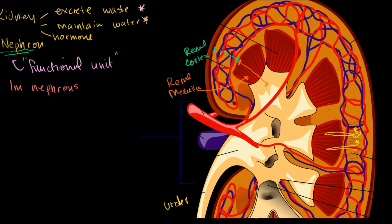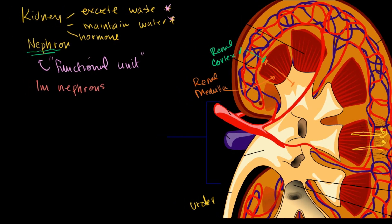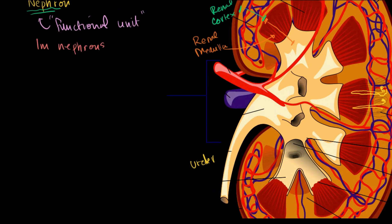Let's actually figure out how a nephron filters the blood and makes sure that not too much water, not too much of the good stuff in our blood ends up in the urine. So I'm going to start with the blood flow. The blood's going to come in — an arterial capillary — this is actually called the afferent arteriole. Blood is coming in, then it goes into this big windy place called the glomerulus.